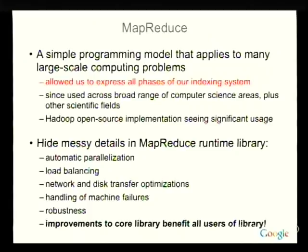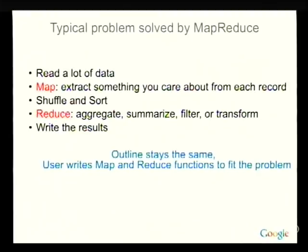MapReduce allows you to express relatively simply, in a couple of functions, what you're trying to do to the input data and how you want to transform and produce the output data. If you take computations expressed this way, you can hide a lot of the messy details that were previously intermingled with the simple computation, put all that complexity in a library, and let the library deal with those issues across all kinds of different computations.